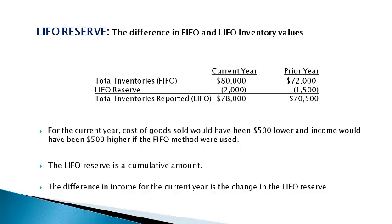Current year only is reported on an income statement. For the current year, cost of goods sold would have been $500 lower and income would have been $500 higher if the FIFO method were used. The difference in income is the change in the LIFO reserve. The LIFO reserve is a cumulative amount and the income statement reports the change for one period only. As such, the difference in the cumulative balance represents the current period change.